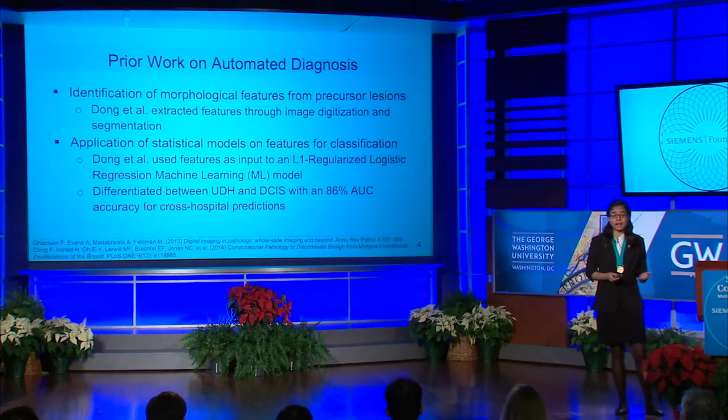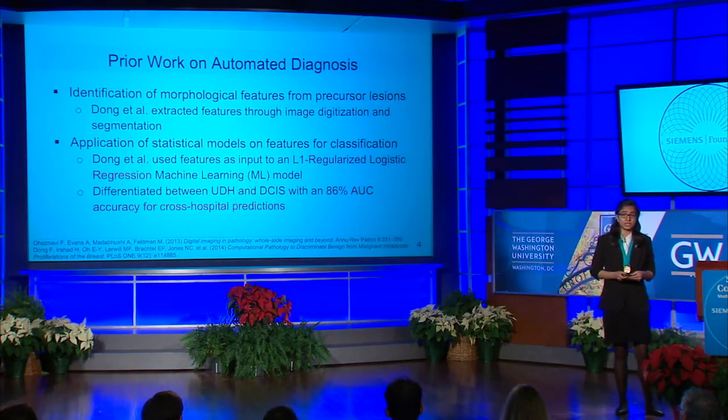The prior work on automated diagnosis has identified morphological features from precursor lesions and applied statistical models on these features. Dong and others extracted features through whole slide image digitization and image segmentation, then used these features as input to an L1 regularized logistic regression machine learning model.